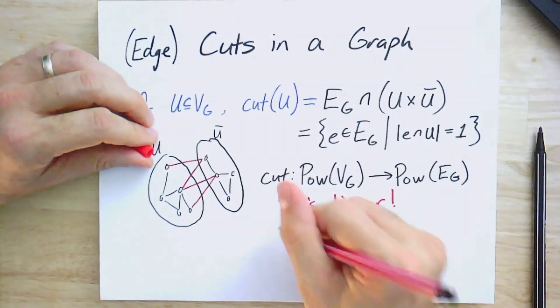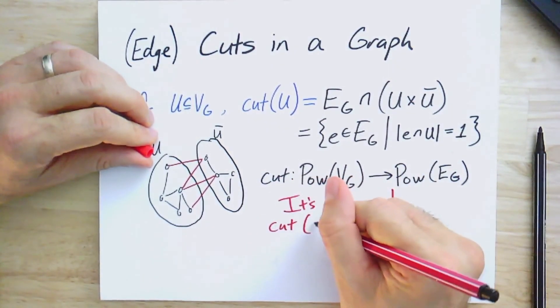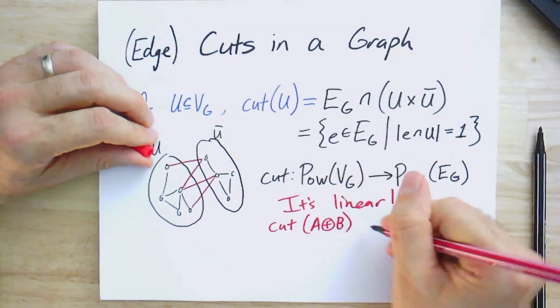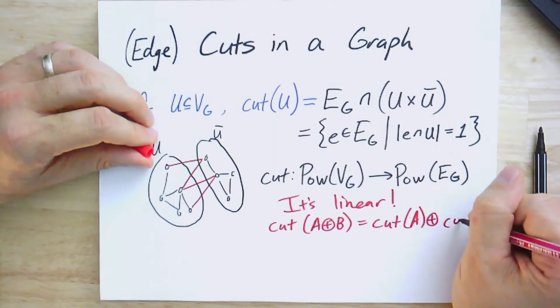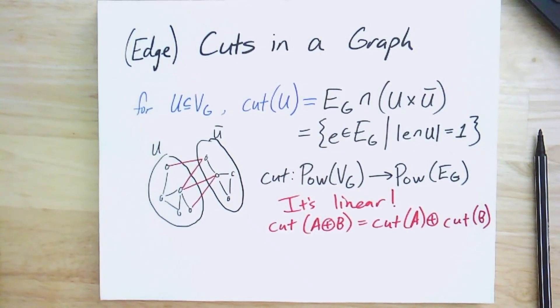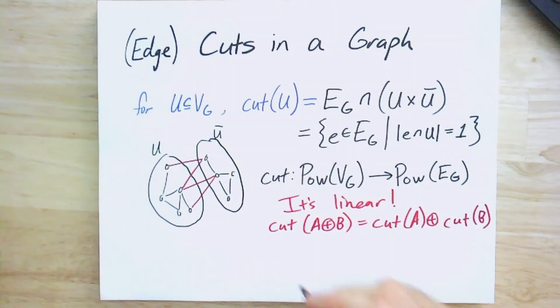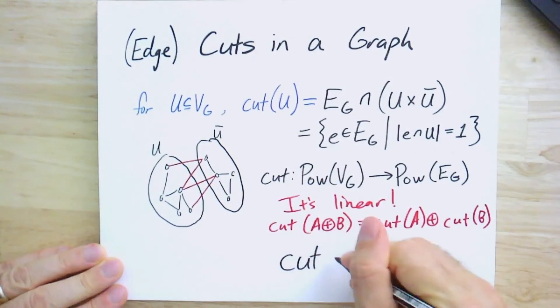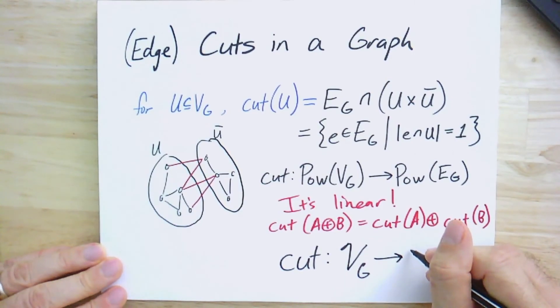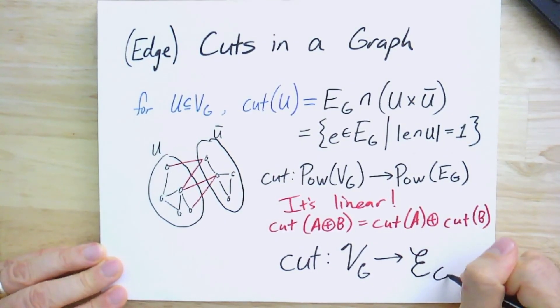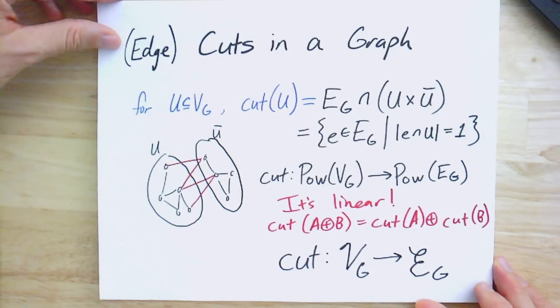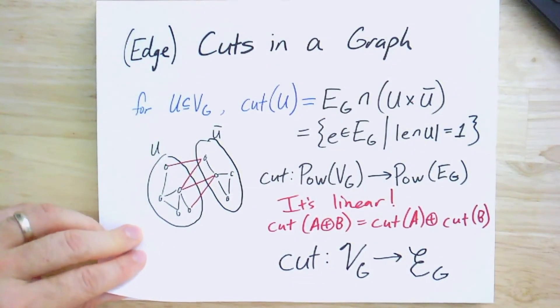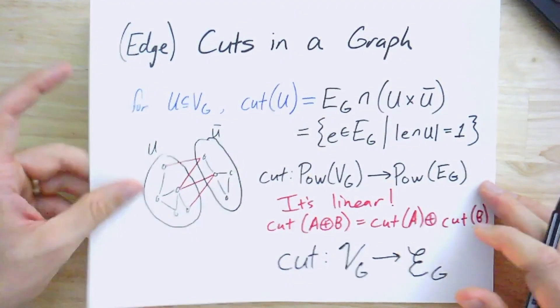So we're going to prove this, but the key idea is that the cut of A plus B is going to be equal to the cut of A plus the cut of B. So, in fact, we actually have a linear map, so you can think of this as follows, that this is actually a linear map between our two vector spaces. So we have the vertex space of G and the edge space of G. And this cut function actually takes us from one to the other, and it's a nice linear transformation between these two vector spaces.